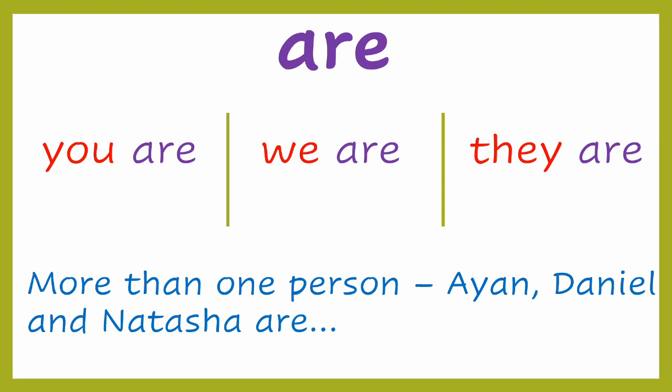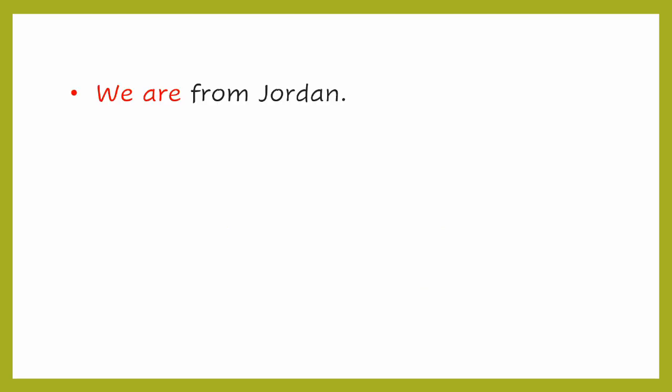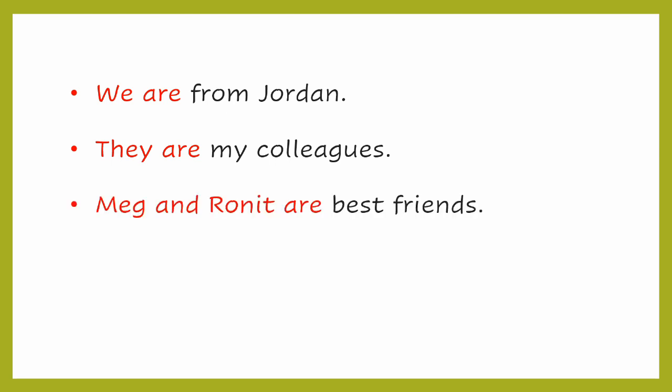Let's look at some more examples with ARE. We are from Jordan — while speaking, we say WE and ARE together and quickly: we're. They are my colleagues — they are. Meg and Ronit are best friends, so here we used ARE with the names of more than one person: Meg and Ronit.